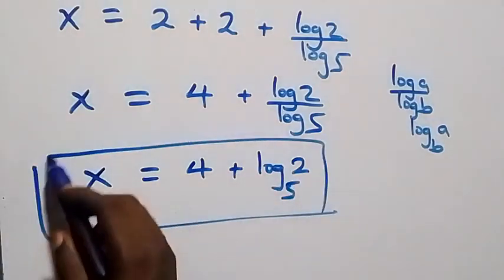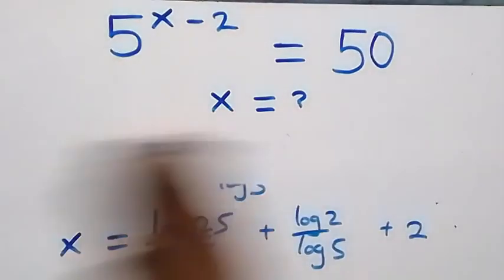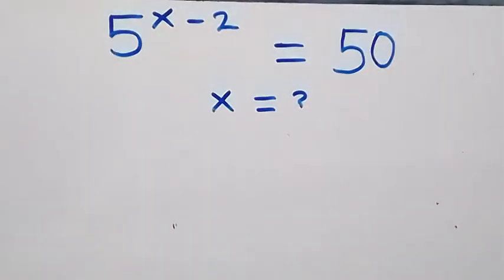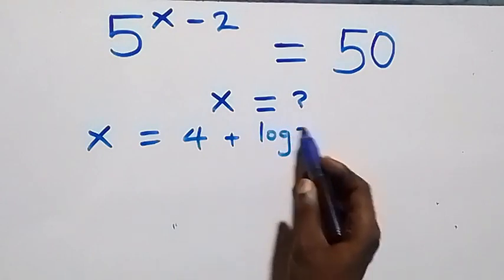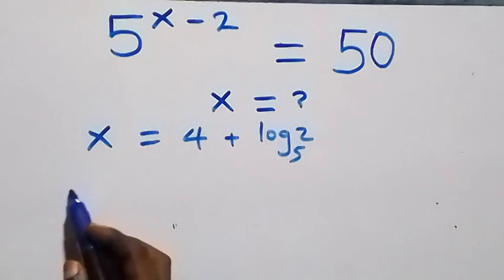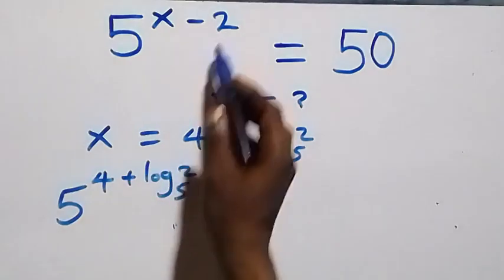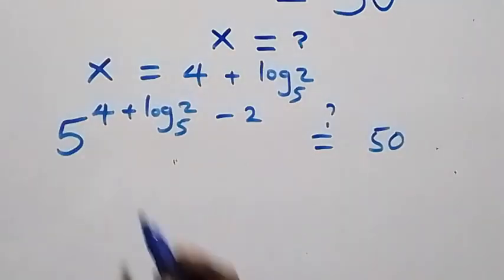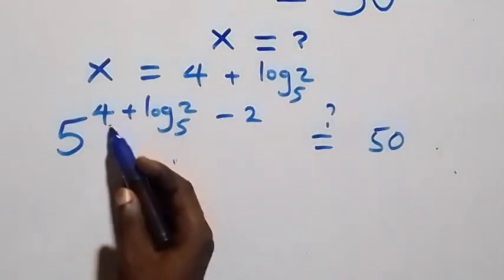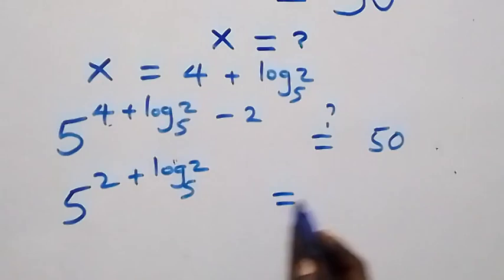So here we have the value of x in this given problem as 4 plus log 2 base 5. Now let's check if this satisfies the given problem, that is, substitute x equals to 4 plus log 2 to base 5. What we have becomes 5 raised to power 4 plus log 2 to base 5, minus 2, equals to 50. We bring 4 and minus 2 together: 4 minus 2 is 2, so we have 5 raised to power 2 plus log 2 base 5, equals to 50.